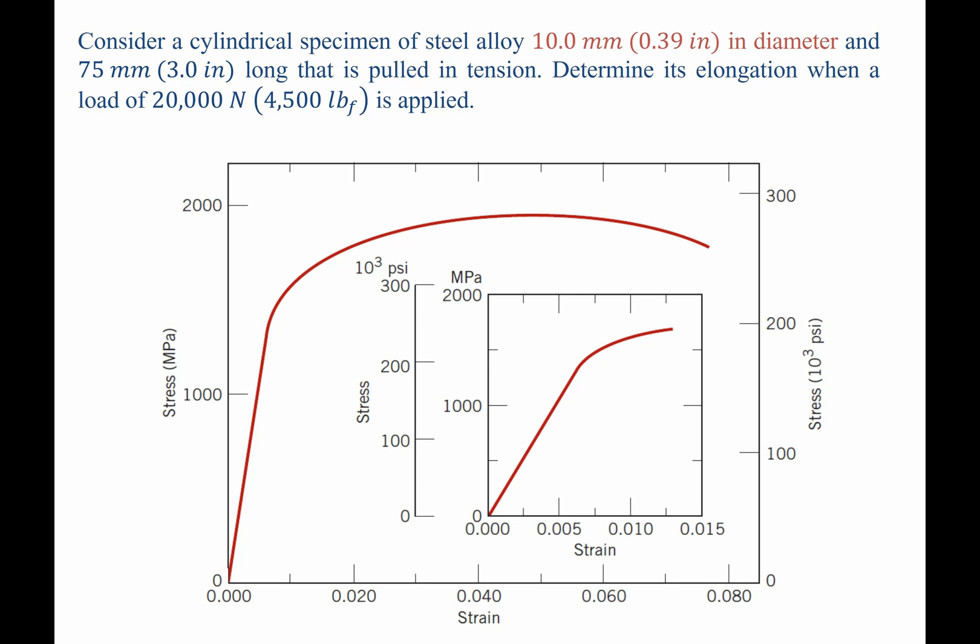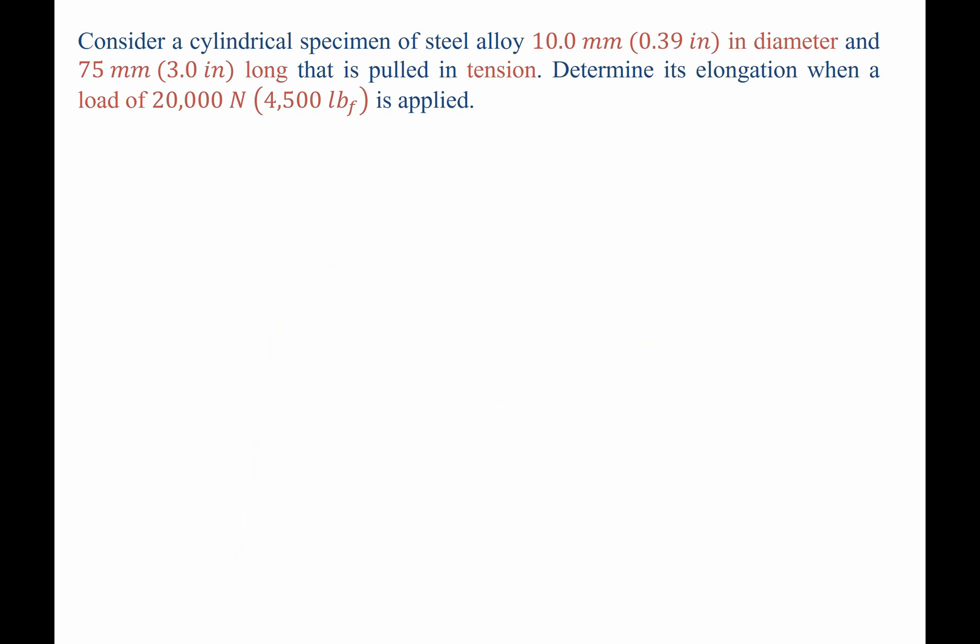So key information is 10 millimeters in diameter, 75 millimeters long, tension, and the load is 20,000 newtons. To solve this question, we know that the approach we're going to need to determine elongation is to begin by determining the stress. Once we have stress, we're going to need to determine strain, and once we have strain, only then can we calculate elongation.